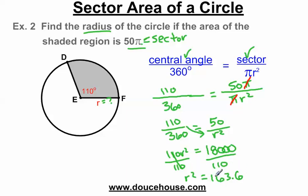Am I done here? No, not quite. This is radius squared. I need the radius. How do you cancel out radius squared? You've got to square root. I'm square rooting both sides here. This will cancel out the square next to the r. The radius equals the square root of 163.6, which is 12.8. This is the radius for this circle that has an area of the sector of 50 pi and a central angle of 110.